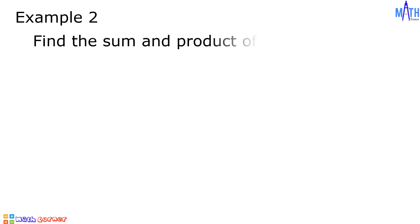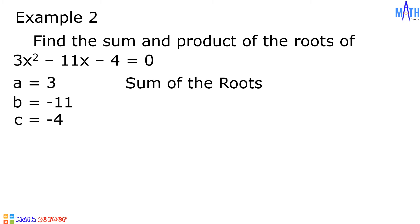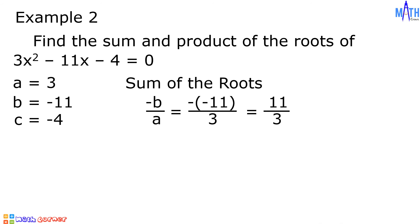Example number 2: let us find the sum and product of the roots of 3x² - 11x - 4 = 0. This quadratic equation is written in standard form. The value of a is equal to 3, b is equal to negative 11, c is equal to negative 4. The sum of the roots: negative b over a is equal to negative of negative 11 over 3. Since negative of negative 11 is equal to positive 11, then we have 11 over 3, already expressed in lowest term.